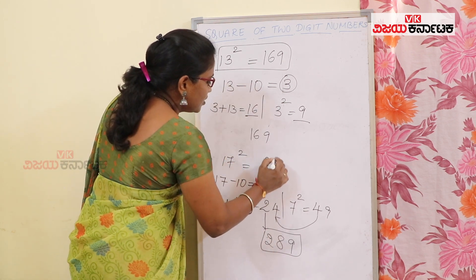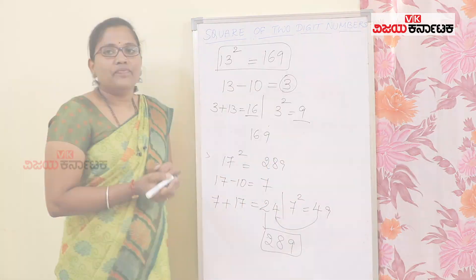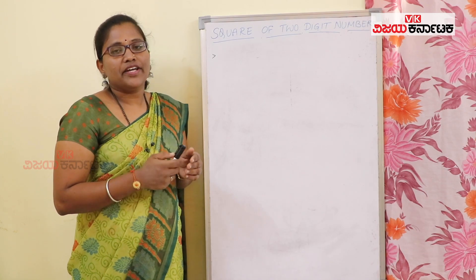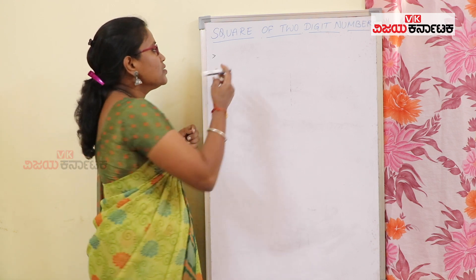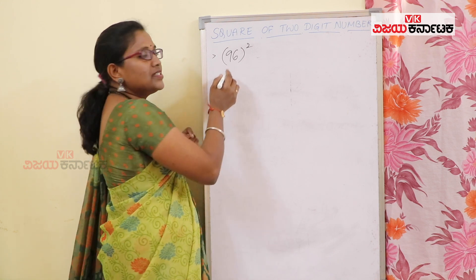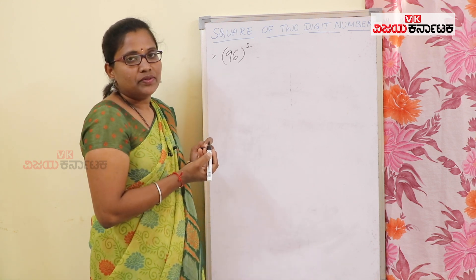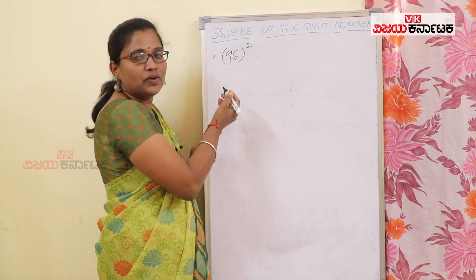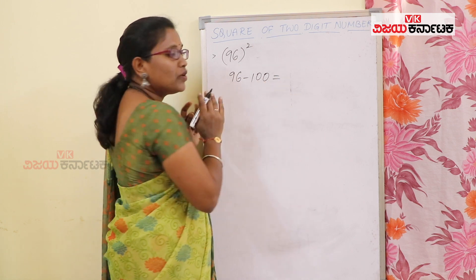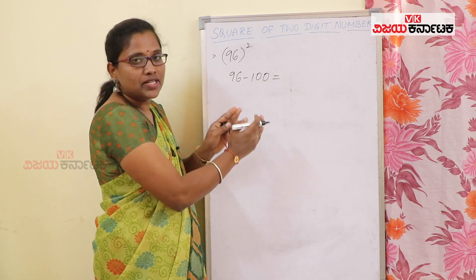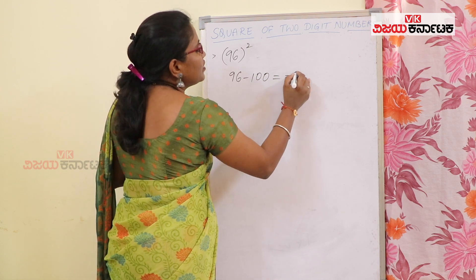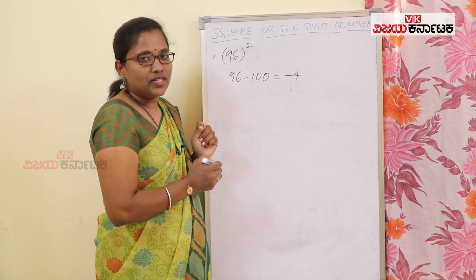The next base is 100. For example, I will have 96 whole square. So you add 96 to 100. The difference is 96 minus 100, which is minus 4.